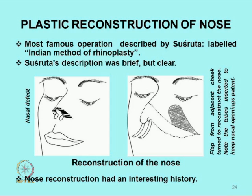Then we come to plastic reconstruction of the nose — perhaps the most famous operation described by Sushruta. It is labelled the Indian method of rhinoplasty and is perhaps the only operation designed in India with international recognition. However, Sushruta's description is fairly brief — only two or three verses — considering the great fame of this operation. There is an interesting history about this operation worth spending time on.